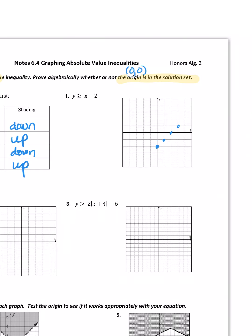Slope of one: up one, over one. I'll use my straightedge. It's a greater than or equal to, so it gets a solid line. Since it's greater than, I shade above that line. Anything in the shaded area is a solution. We think the origin is in the solution set because it's in the shaded region. Let's test it: is 0 ≥ 0 − 2? Is zero greater than or equal to negative two? That's a true statement.